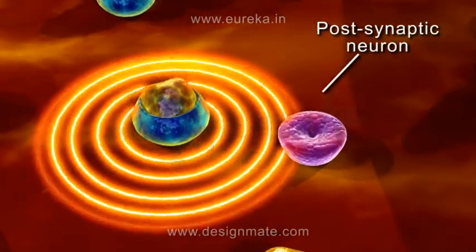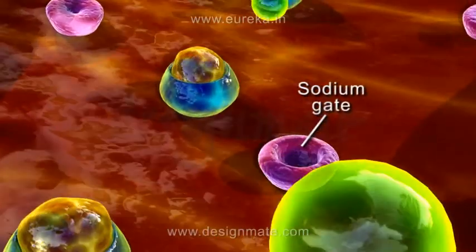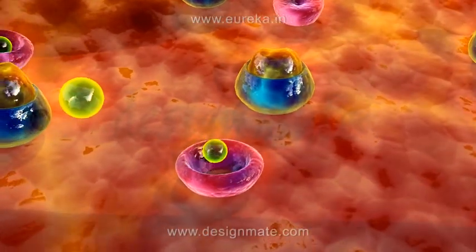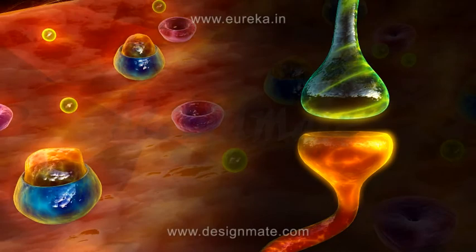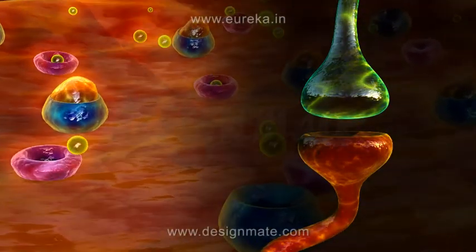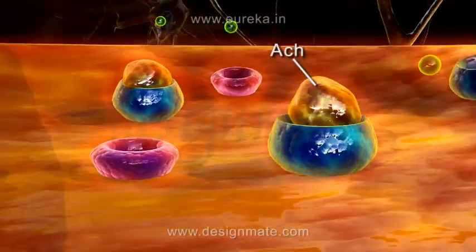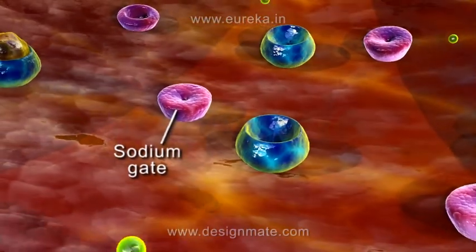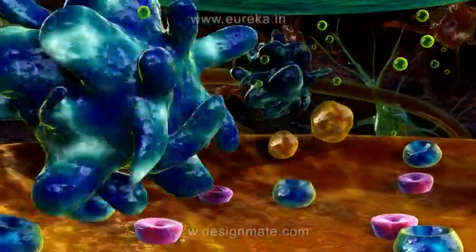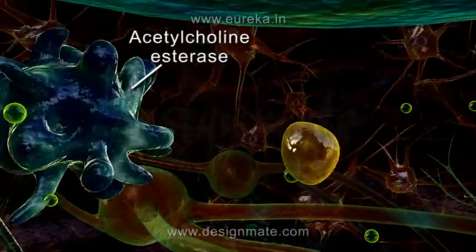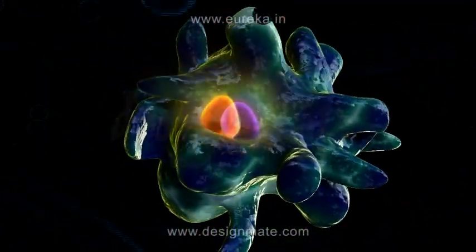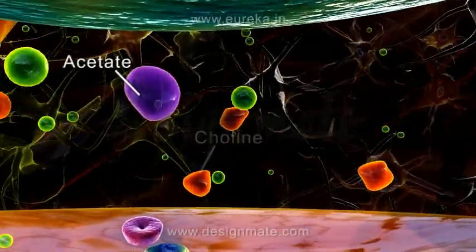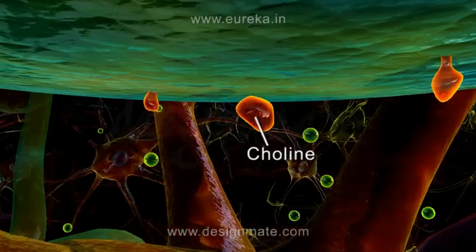This excitatory response involves the opening of the sodium gates, which triggers a wave of depolarization. This depolarization wave travels through the neuron. Once the neuron is activated, the acetylcholine is released from the receptors and reaches the synaptic cleft. Simultaneously, the sodium gates are closed. An enzyme known as acetylcholinesterase, present in this region, binds to the ACh molecule and breaks it up into an acetate molecule and a choline molecule. The acetate molecule moves out of the cleft region while the choline molecule is absorbed back into the synaptic knob for later use.